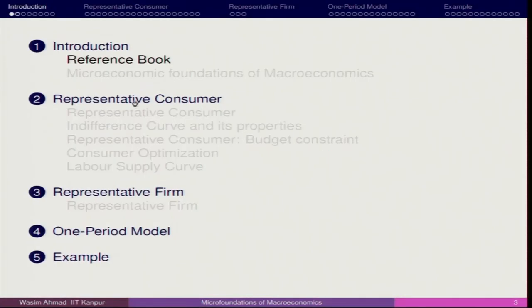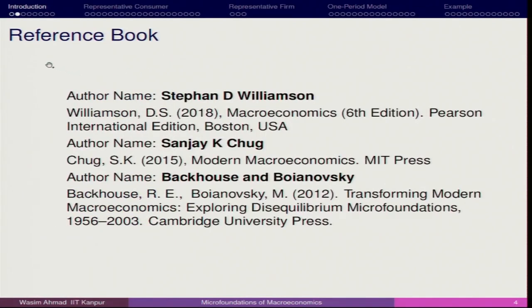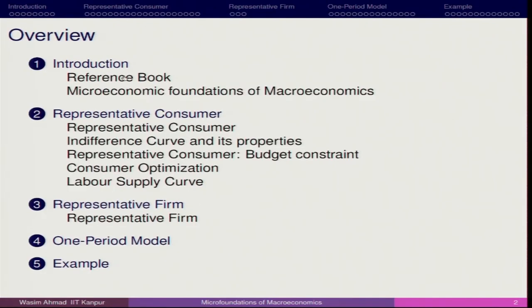I have prepared some slides and I will be sharing them with you. The brief outline of the topics covers the representative agent, representative firms, and different microeconomic agents. One important thing to mention is that we will be talking only in current period terms — this is a static model, not a dynamic model.